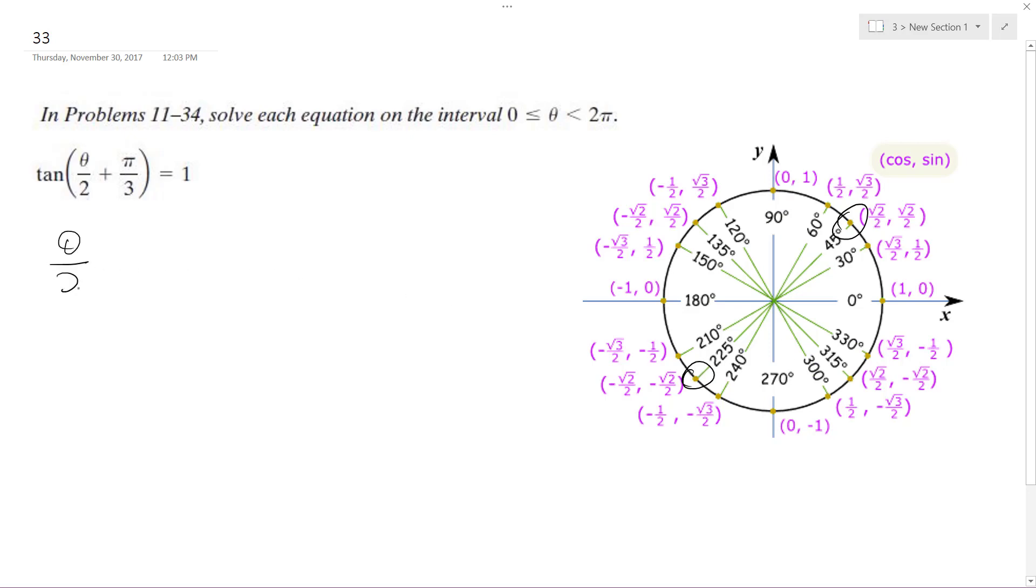So we're going to get theta divided by 2 plus pi over 3 is equal to pi over 4 and 3 pi over 4.